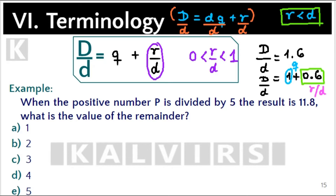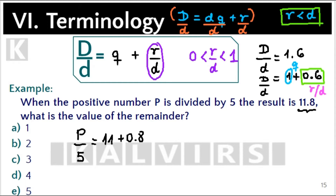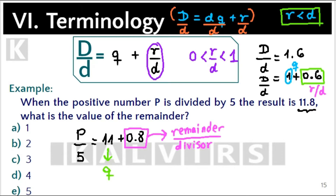For the example shown below, when the positive number p is divided by 5 the result is 11.8. What is the value of the remainder? We use this formula: the dividend is p, the divisor is 5, and the result is 11.8. We rearrange 11.8 as 11 plus 0.8. The integer 11 must be the quotient, and 0.8 must be the remainder over the divisor. The divisor is 5.